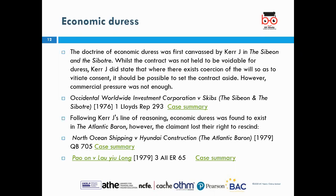The Privy Council identified four factors to consider in assessing whether economic duress was present: firstly, did the person claiming to be coerced protest? Secondly, did that person have any other available course of action? Thirdly, were they independently advised? And fourthly, after entering into the contract, did they take steps to avoid it? In the present case, the defendant did not protest at the time, could have enforced the contract through specific performance, had taken legal advice, and took no steps to avoid the agreement. Therefore, no economic duress could be established — it was simply commercial pressure, far short of duress.